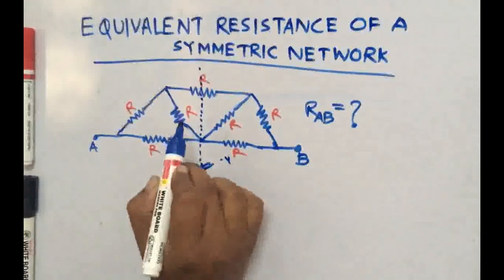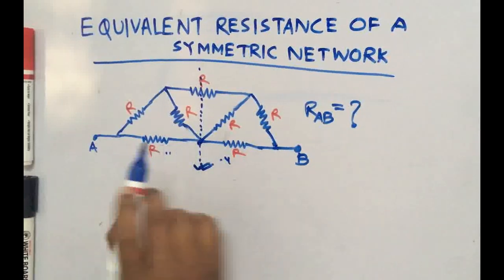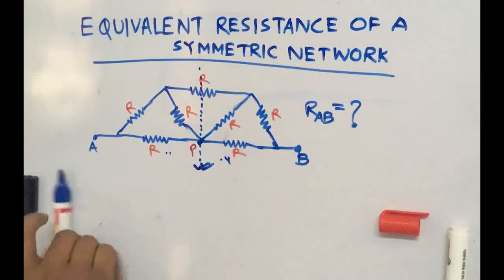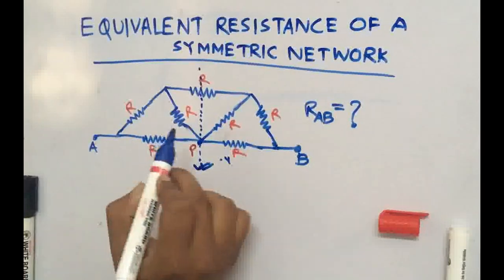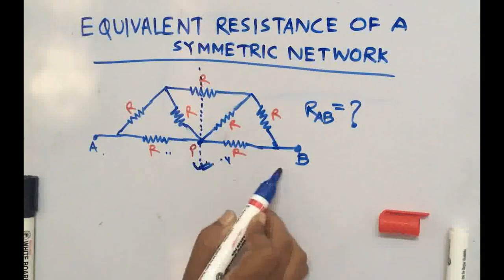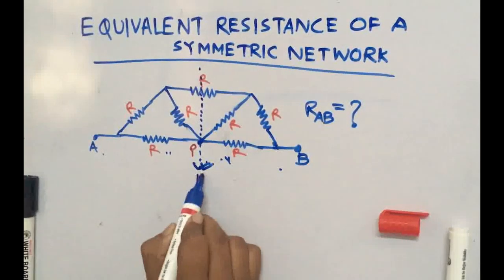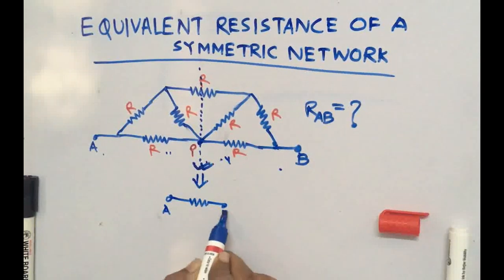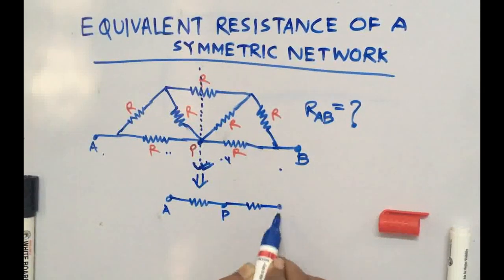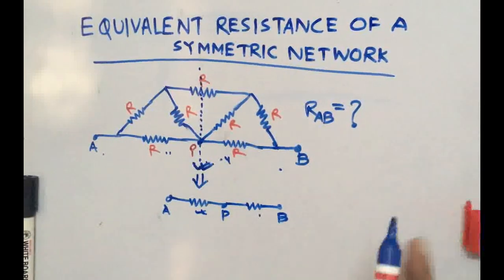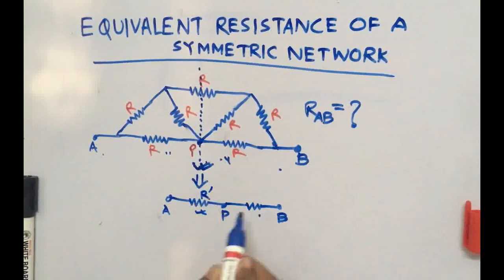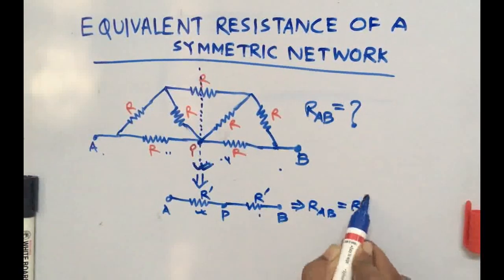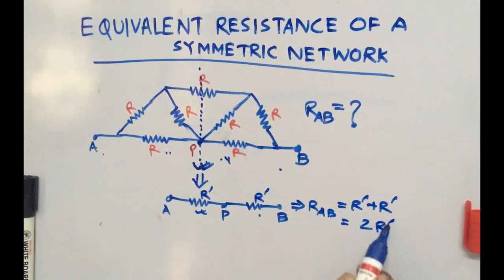So you can find the resistance across A and B by the symmetric line method. This is the line — suppose I name this point as P. Now, since each resistance has equal values, the resistance between A and P and the resistance between P and B will be the same. I can simplify this circuit: between A and B we have point P, and both resistances r_dash are in series.